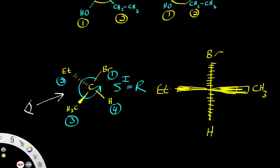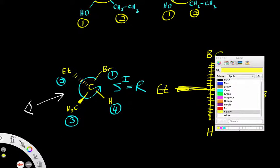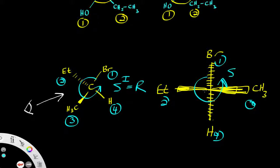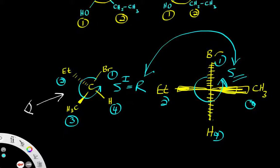Assigning priorities in the Fischer projection: bromine is 1, ethyl is 2, methyl is 3, and hydrogen is 4. Counting in this direction gives an S configuration, and no inversion is needed because hydrogen is pointing away from us. However, this is inconsistent with the R we obtained before from the planar-bond method — confirming that method was wrong. The Fischer projection is a reliable tool, which makes that earlier approach questionable.